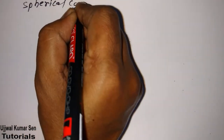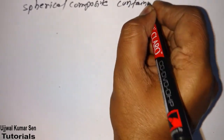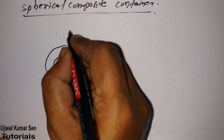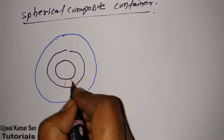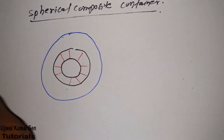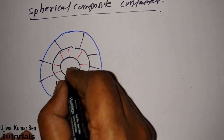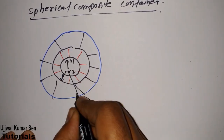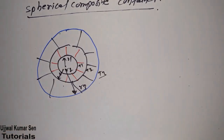So this derivation will be for a composite spherical container. Suppose we are having a hollow sphere made of two different materials — a composite. Suppose the radii are r1, r2, and r3.